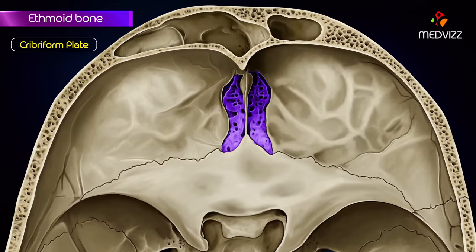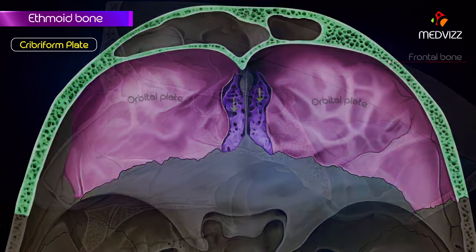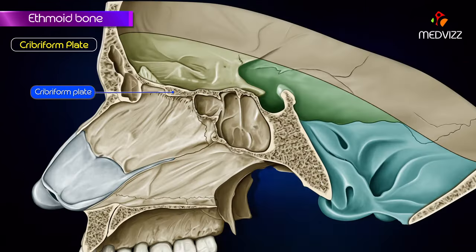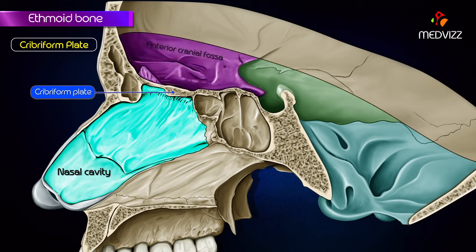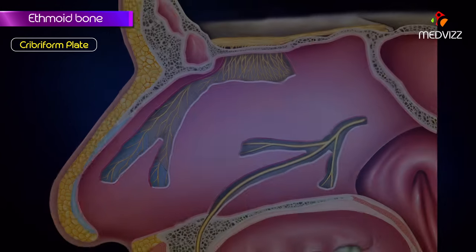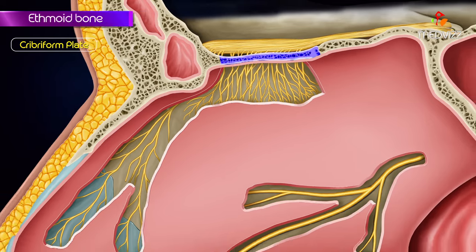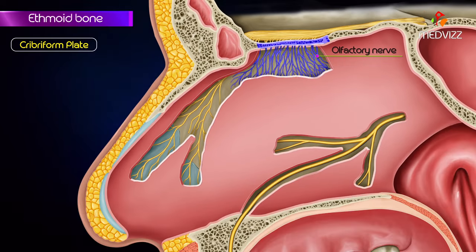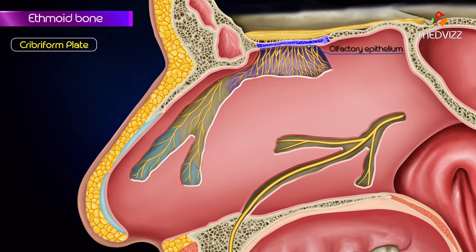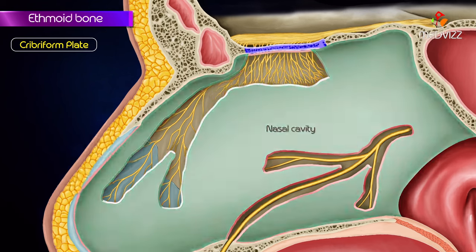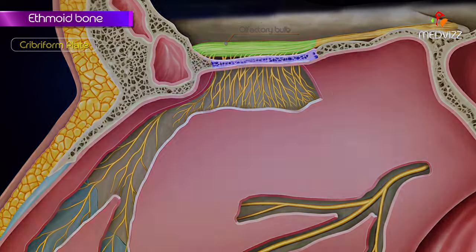The cribriform plate fills the ethmoid notch between the two orbital plates of the frontal bone and separates the nasal cavities from the anterior cranial fossa. It has a number of small pores which transmit the filaments of the olfactory nerve from the olfactory epithelium of the nasal cavity to the olfactory bulb of the brain.